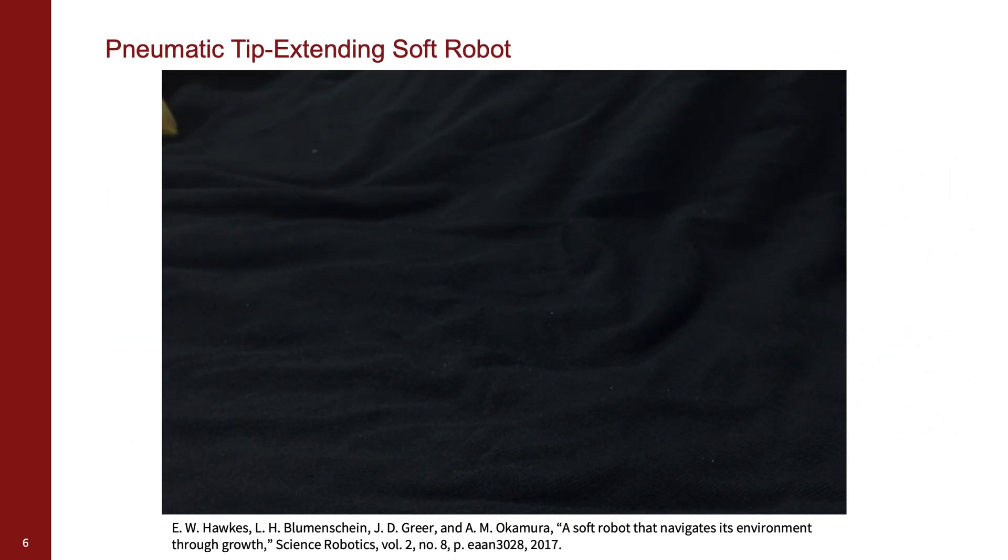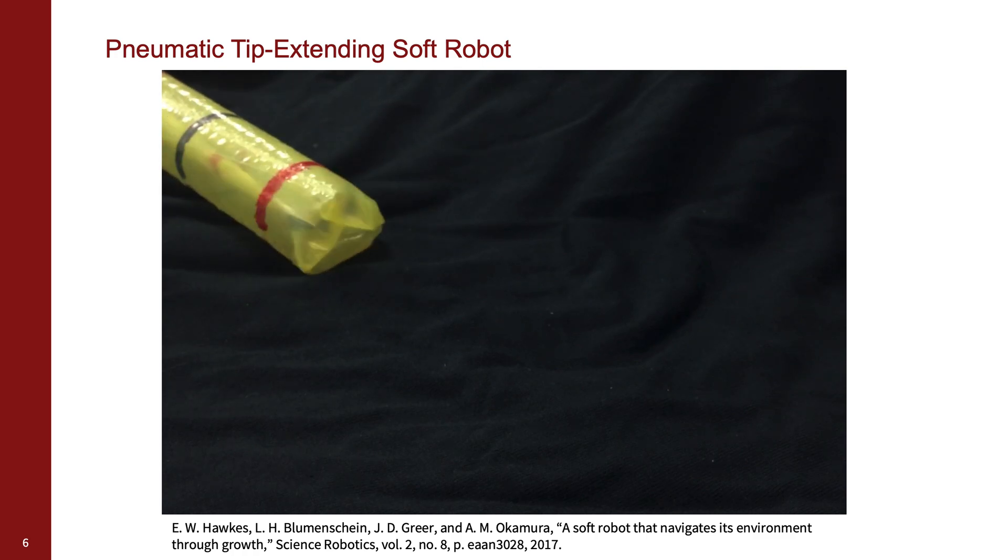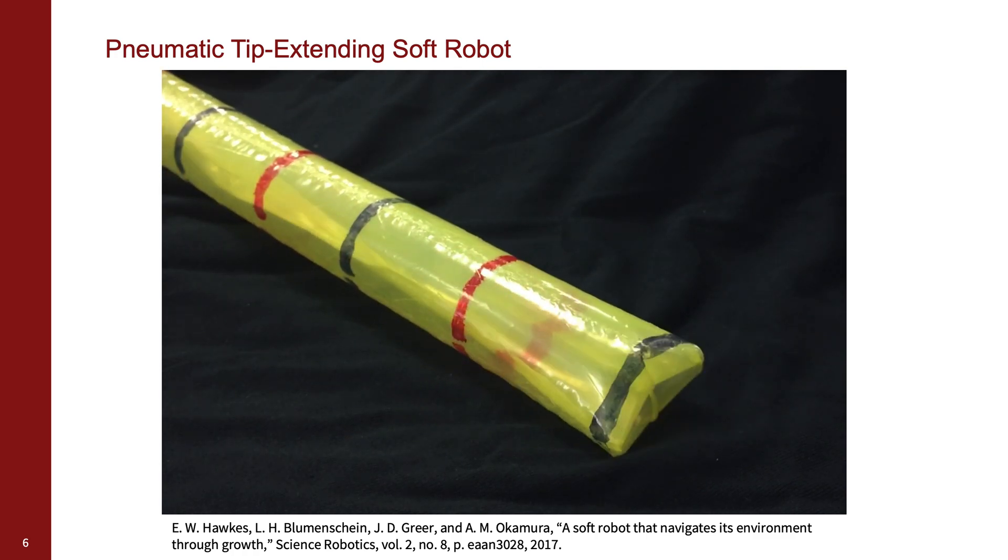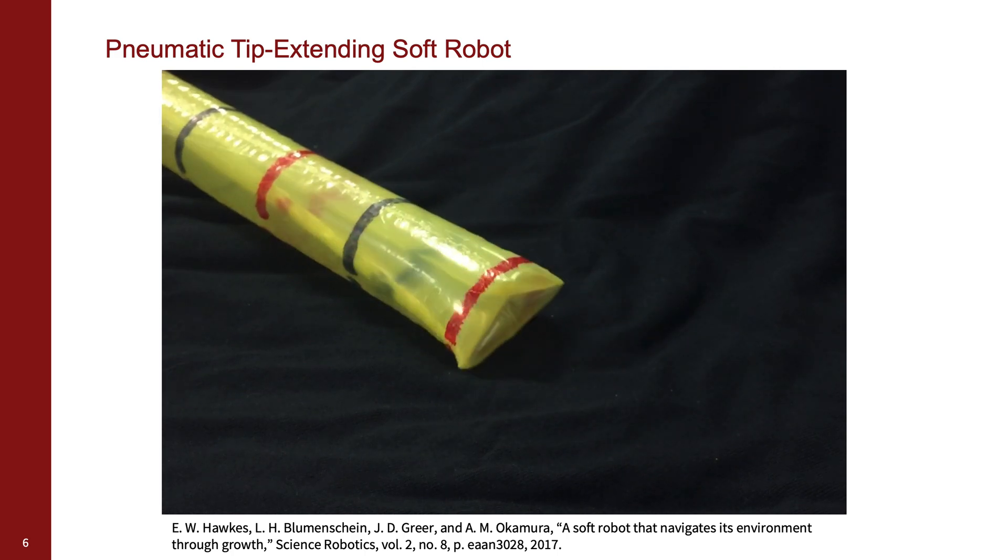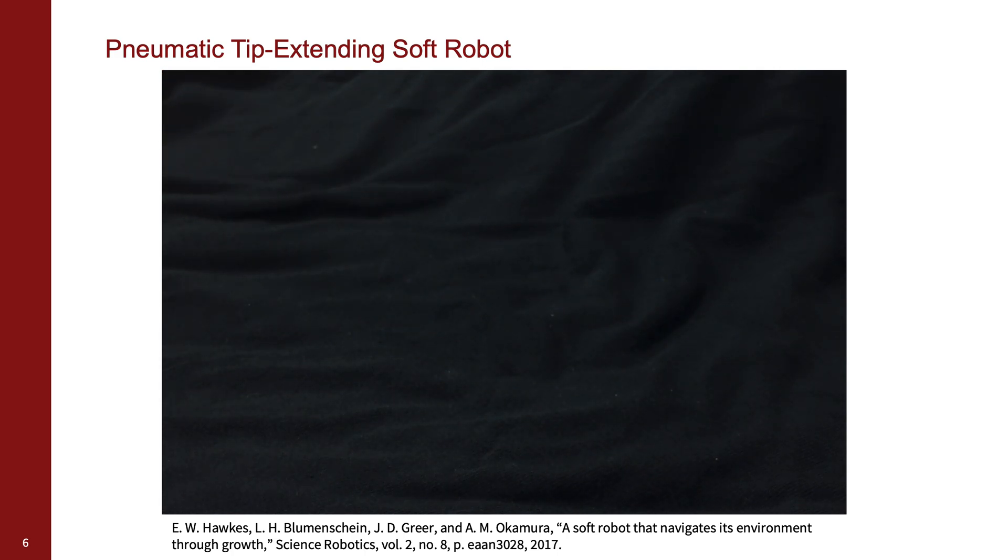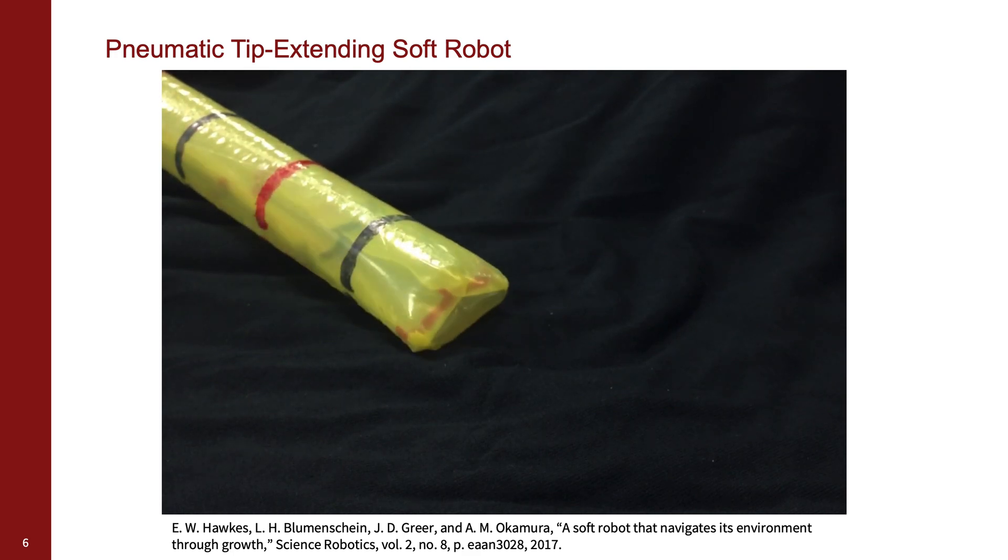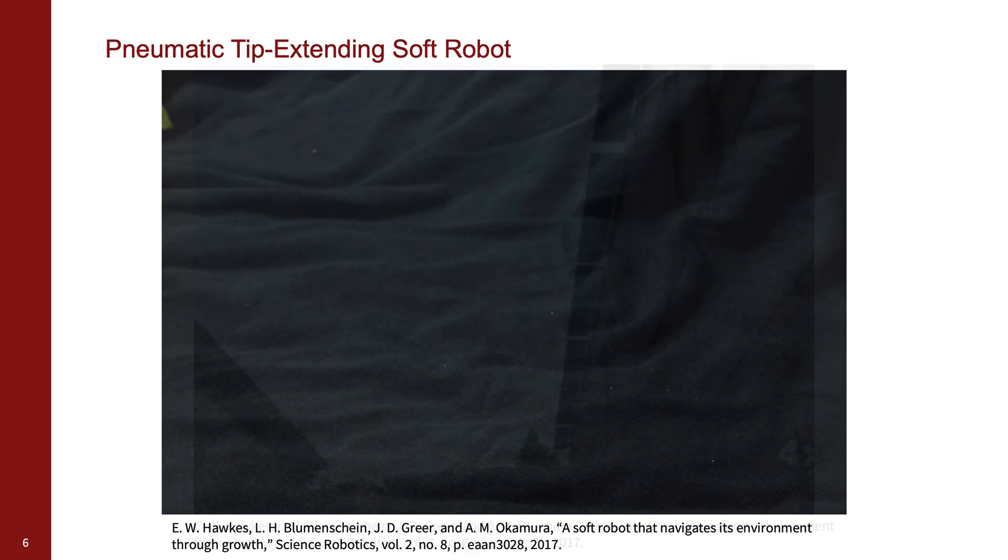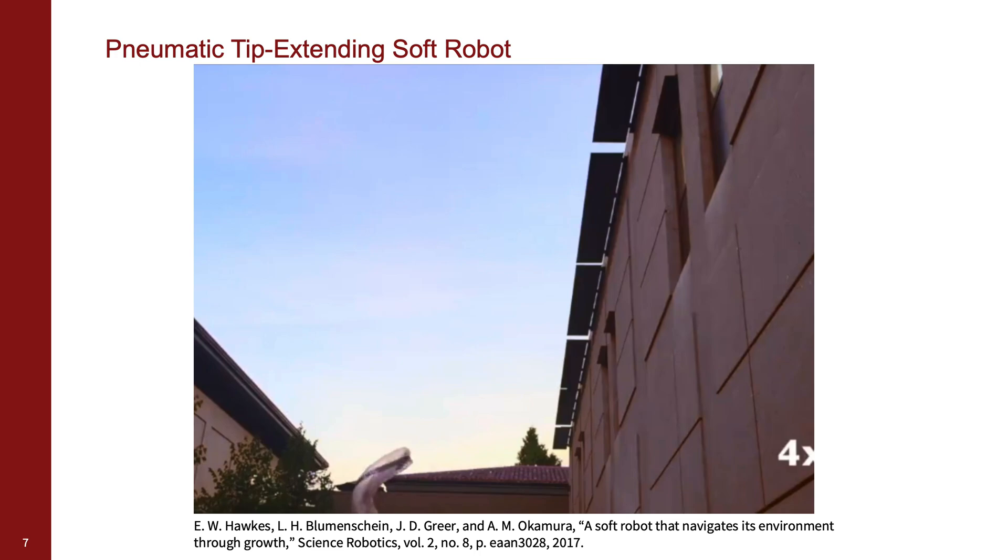Soft robots can exhibit a large range of shape change due to their compliance. One recent class of soft robots, referred to as vine robots, are able to create large shape change through length change by extending from the tip using internal pressure. These growing robots have been used previously to create deployable structures in a range of shapes and for a range of activities.